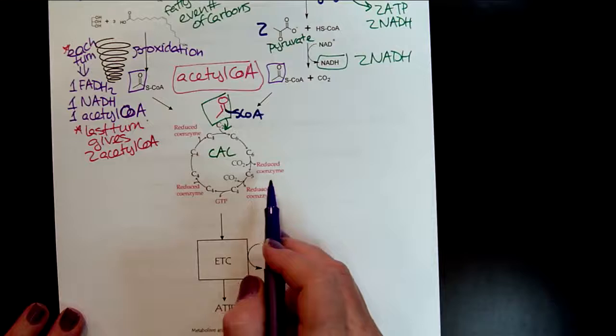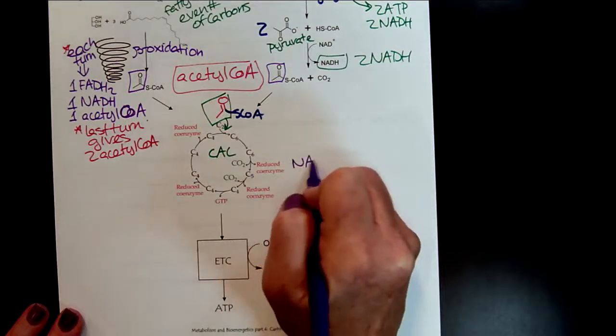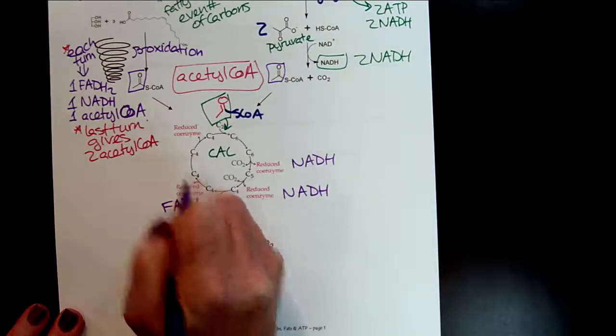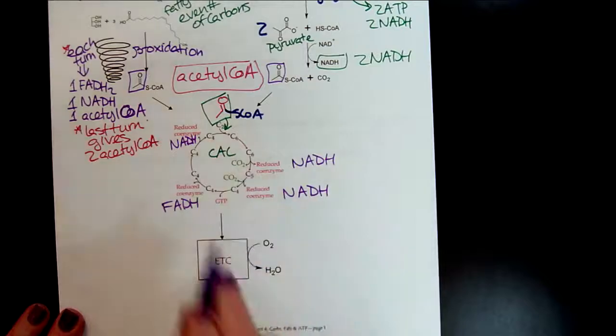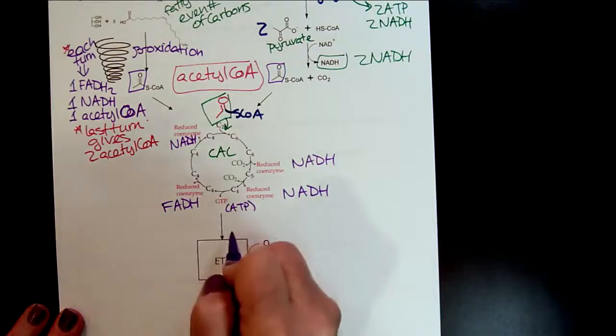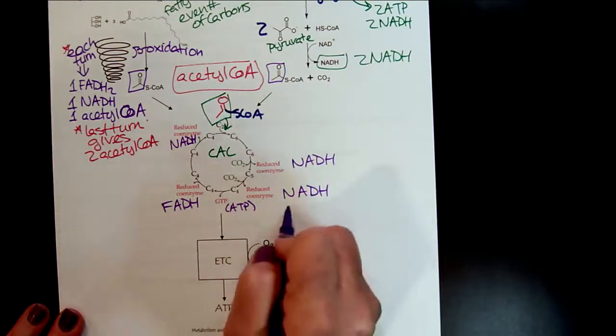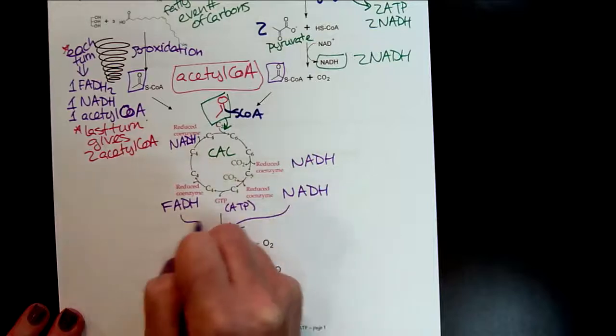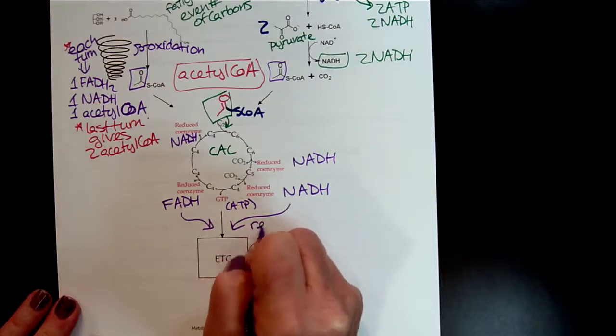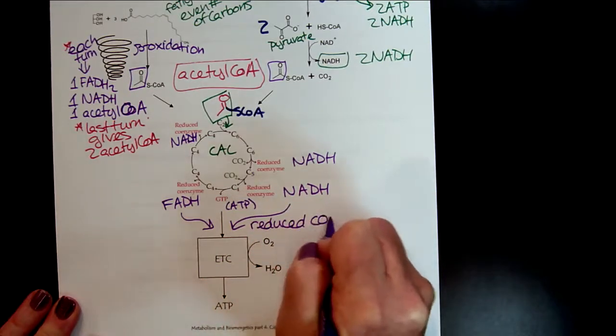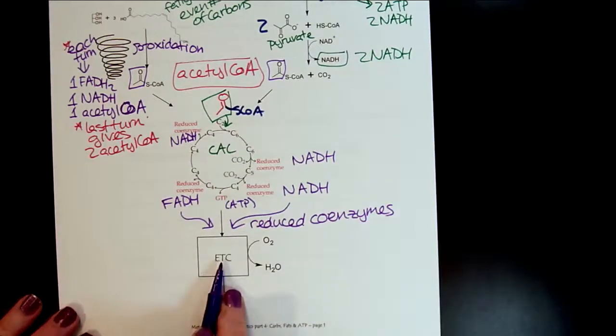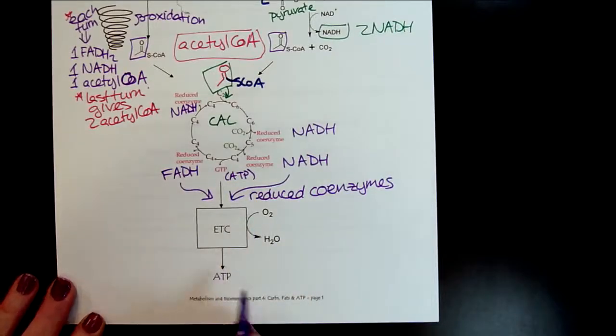So here we get our NADH. We get a couple of those. We get an FADH2 here and another NADH. And then there's our GTP, which is easily converted to ATP. So it's these reduced coenzymes that enter the citric acid cycle, or excuse me, the electron transport chain. Reduced coenzymes enter the electron transport chain, some oxygen is needed, and we get ATP.